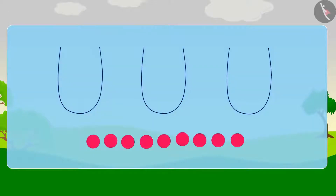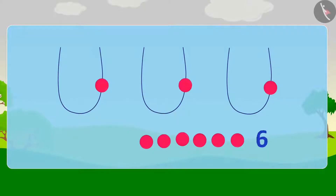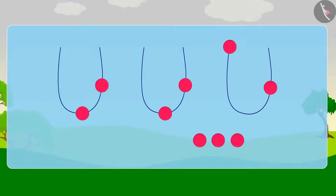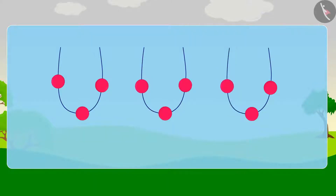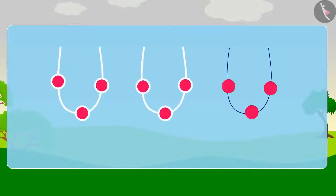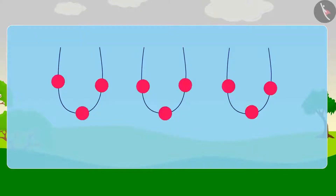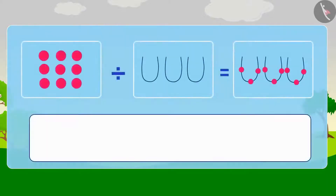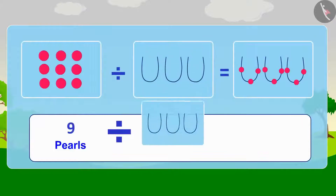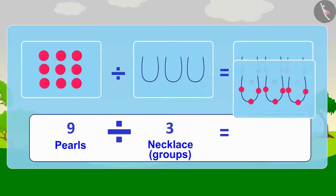Appu slips and all the necklaces are broken. Appu had a total of 9 pearls in his 3 necklaces. Can you help Appu make 3 necklaces with equal pearls again? Let's do it together. First, we will put 1 pearl in each necklace. Now we have 6 pearls left. We continue until all pearls are distributed. Appu's 9 pearls were divided into 3 equal groups and each group had 3 pearls.